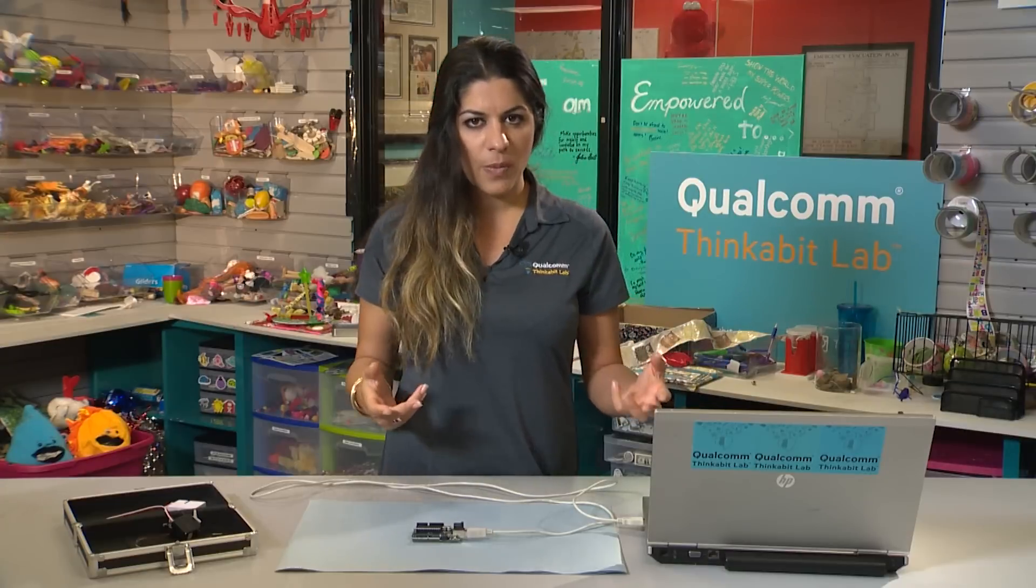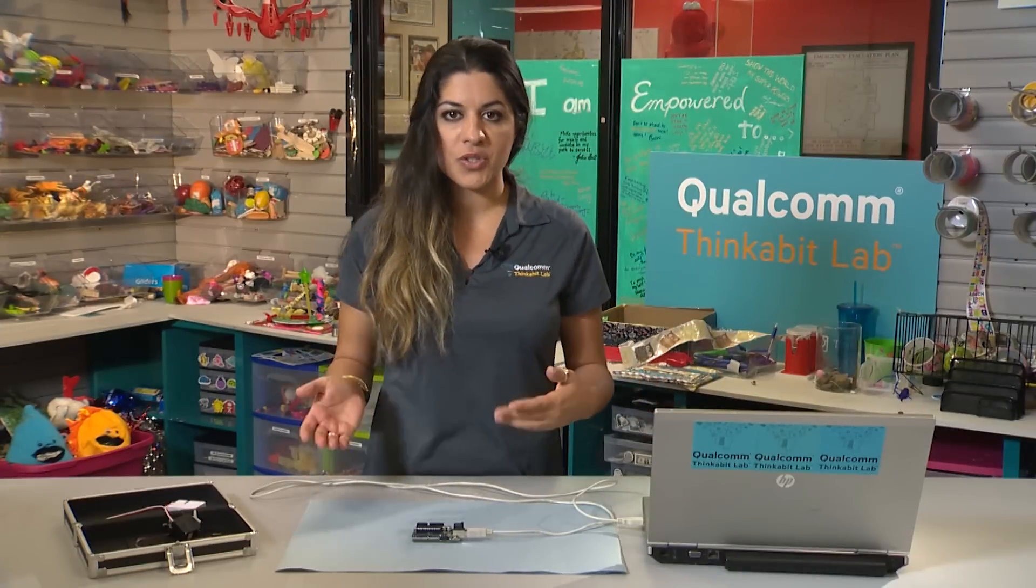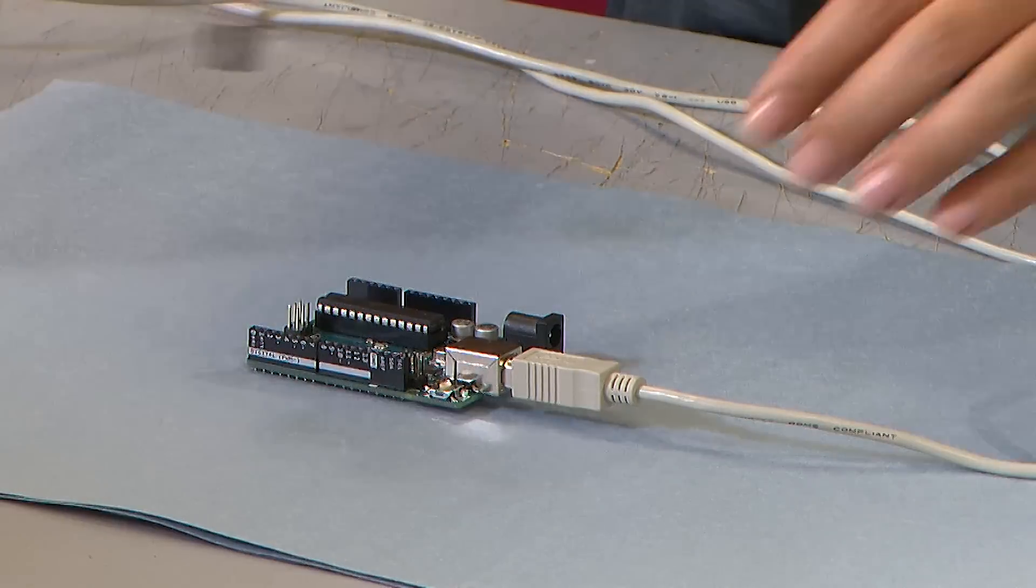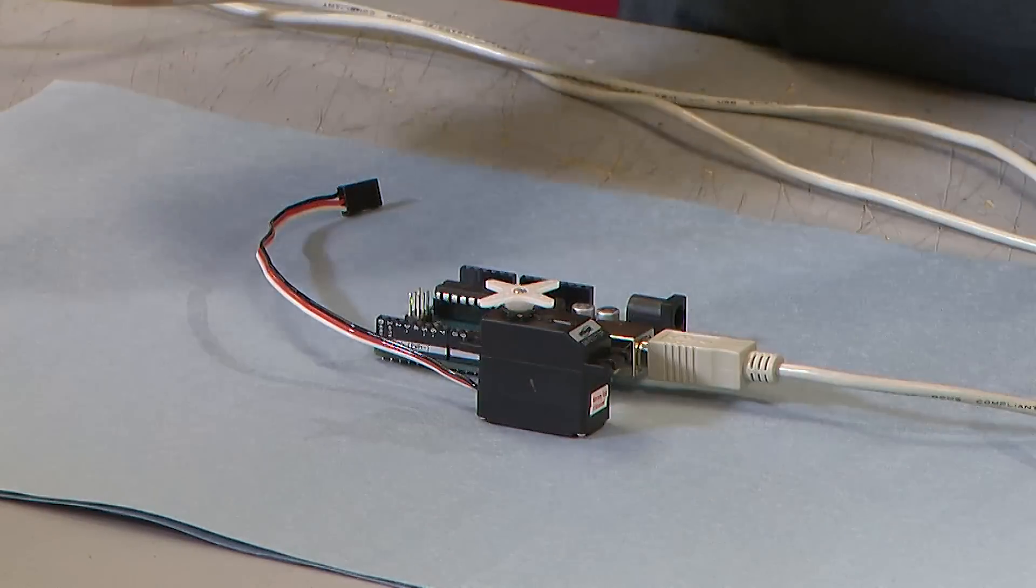The example code I want to write is something that can be used for both servos. The first line: myServo.write(0). This line of code for a big servo, for the continuous servo, will have it spinning to the left really fast. For a small servo, it'll go to position 0 degrees.